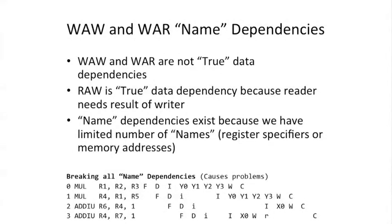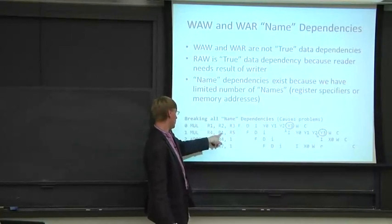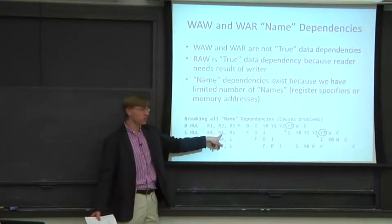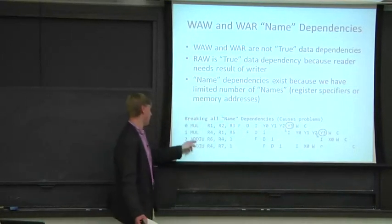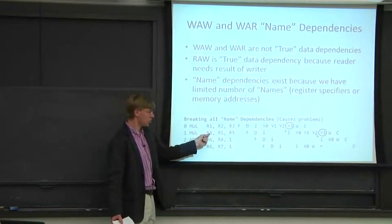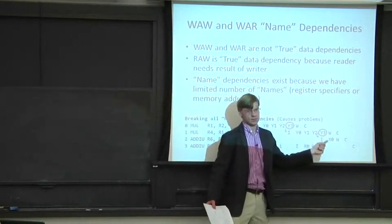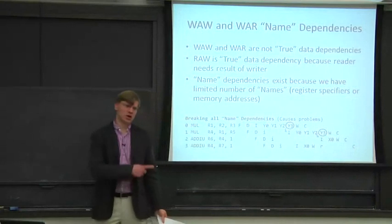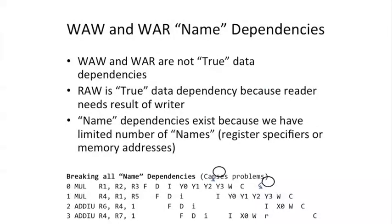Let's identify some important things in here. First, let's identify the true read-after-write dependencies. I put some circles and some arrows here. This writes register one, and the second mul reads the result of that. This add reads register four and the previous instruction writes register four, so that's a true dependence. We can't break those. We may talk at the end of the term about some ways to break those, but they get pretty crazy.